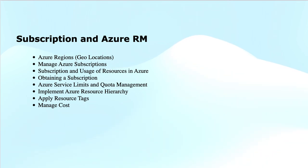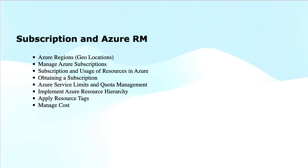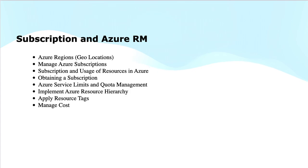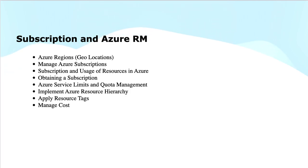Next is creating resource groups, which is a logical container of resources that helps with the delegation of control and assignment of policies. Then we look at determining service limits and quotas. Because Azure is a public cloud, it has service quota limits. Some quota limits are soft limits that can be increased by making a request to Microsoft, while others may have hard limits.